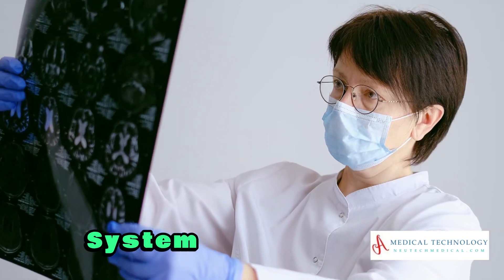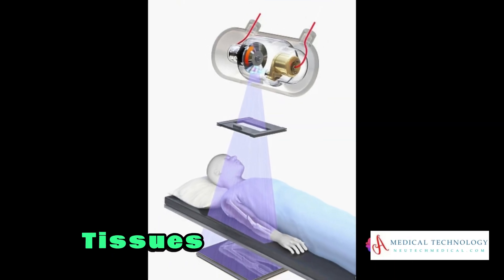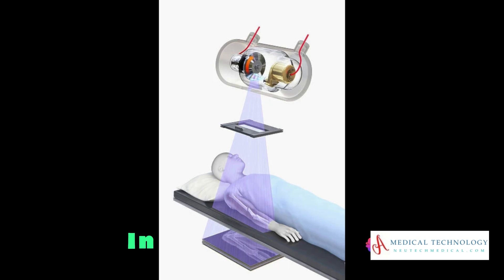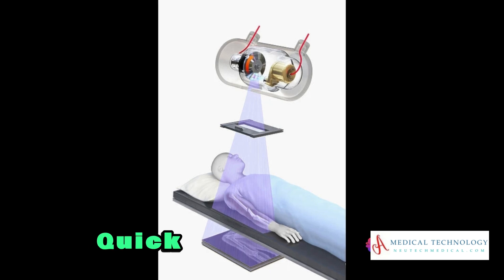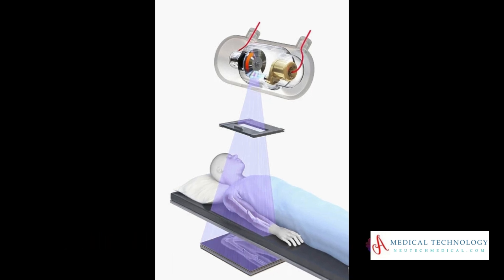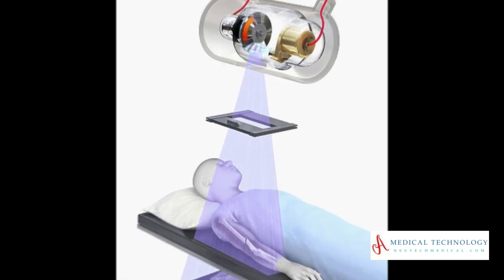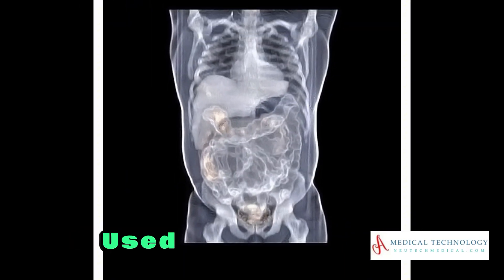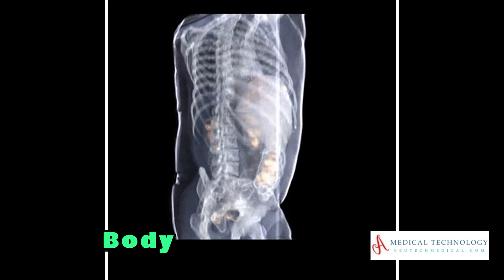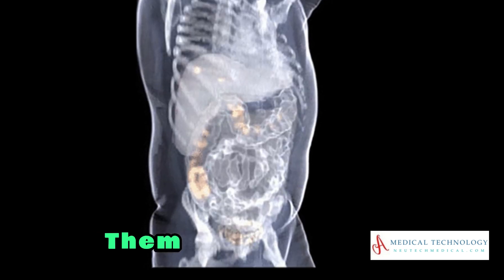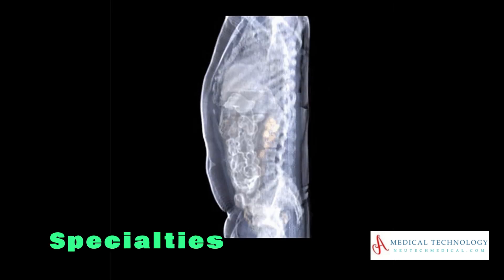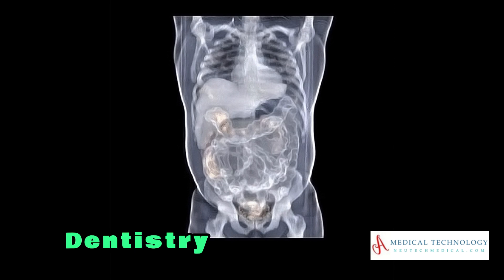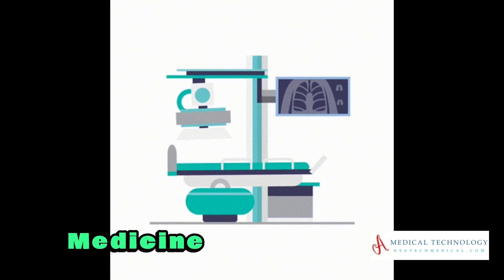Quick and non-invasive. X-ray imaging is a rapid and non-invasive method for obtaining detailed information about the skeletal system, organs, and soft tissues. This makes it particularly valuable in emergency situations for quick assessments. Versatility: X-ray machines can be used to image various parts of the body, applicable in specialties such as radiology, orthopedics, dentistry, and emergency medicine.